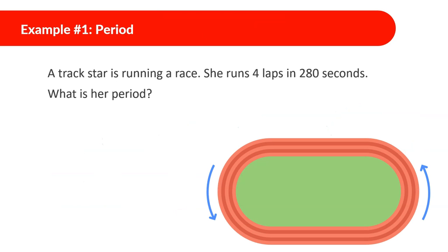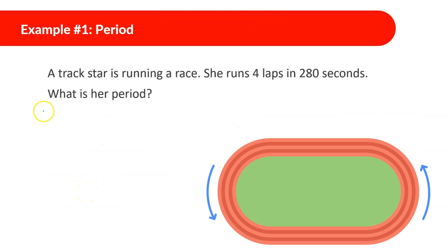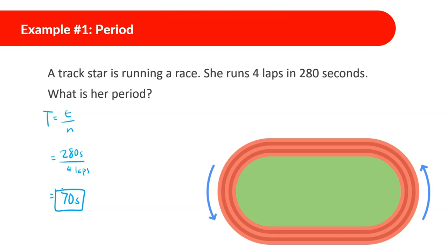Example: A track star runs four laps in 280 seconds. What is her period? Period equals time divided by number of cycles, so T = 280 seconds divided by 4 laps. That gives us a period of 70 seconds. This means it takes her 70 seconds to go around one time.